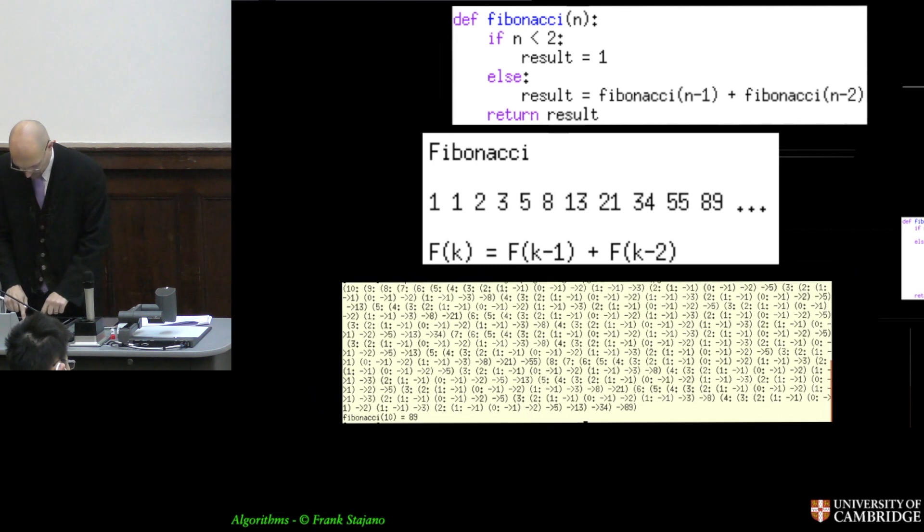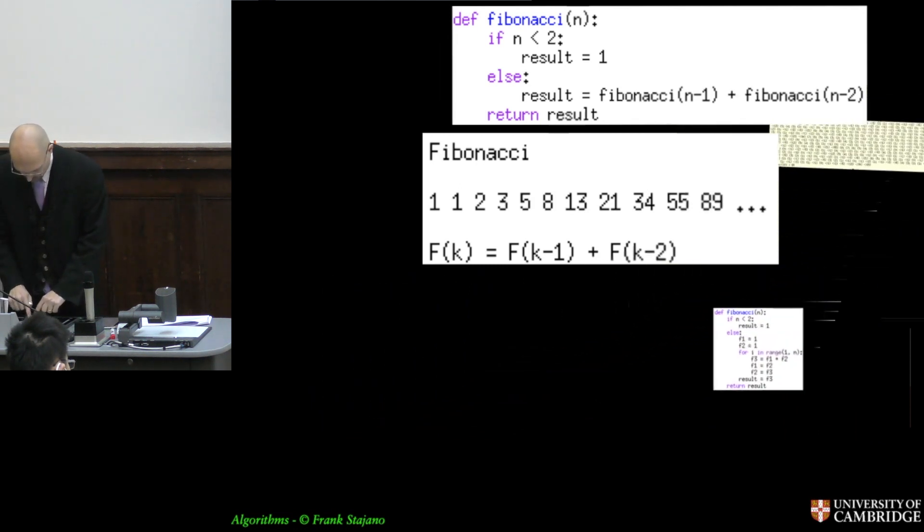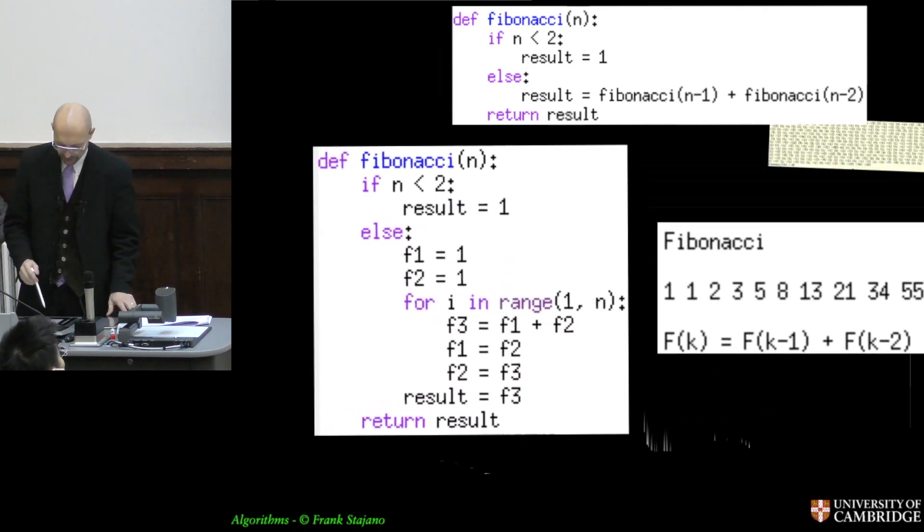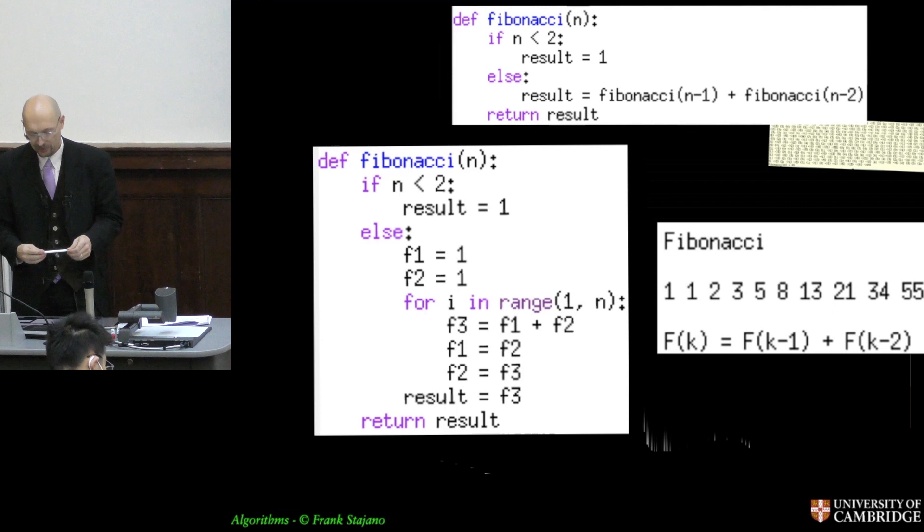So something like this, which may look like a mess compared to this, may look inelegant. It's actually, if you read through it, it's simply: if it's one of the first two, then the result is one. But otherwise, set the basic start of the chain to one. And then for every next element, just add the two previous ones and shift. Add the two previous ones and shift. And the result is the end and return. So this is just an iterative version. It doesn't call itself - it's the thing you did when you were in kindergarten and you were adding them up. And this is actually a much better idea.